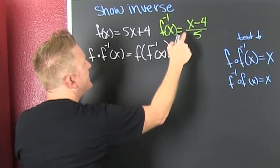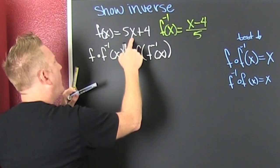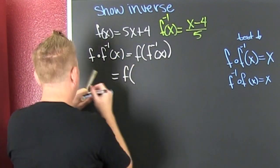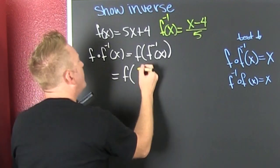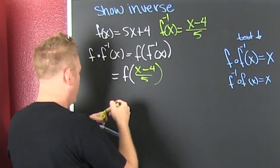It says I take this, this yellow one, and put it in that white one. So we go and we do that. That's f of, wait for it, that's (x minus 4) divided by 5.